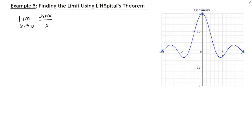First, as I mentioned before, you want to do a direct substitution. So plugging in x equal to 0, you're going to get sine 0 over 0. And we know sine of 0 is 0, so that's going to give you an indeterminate form.